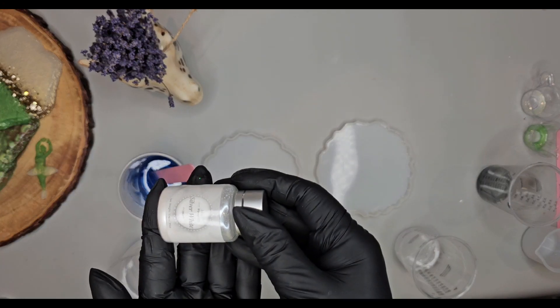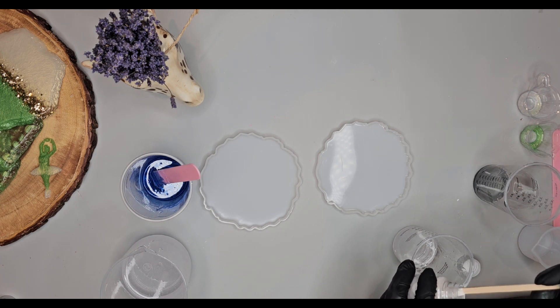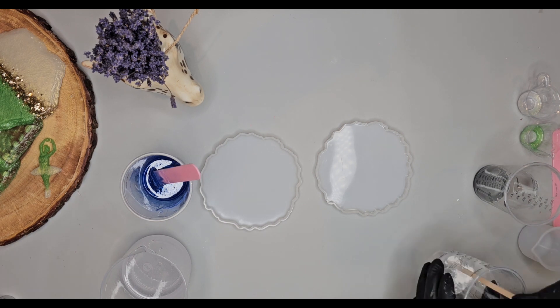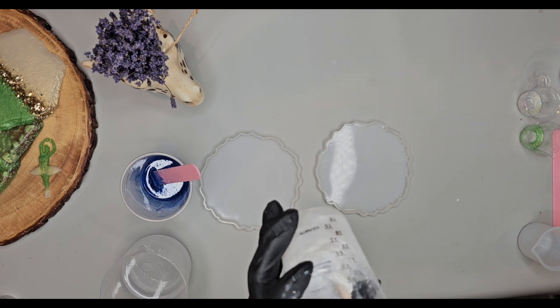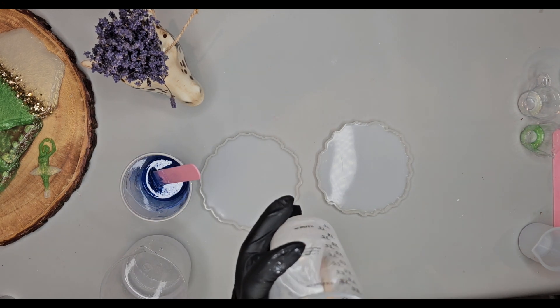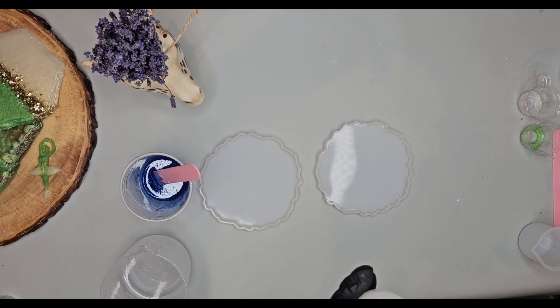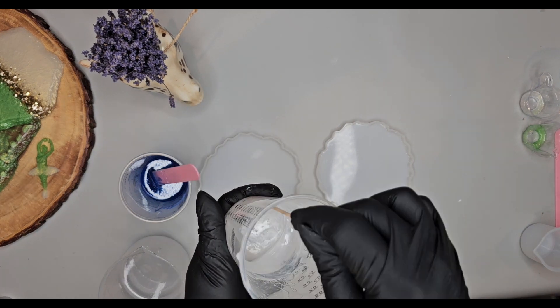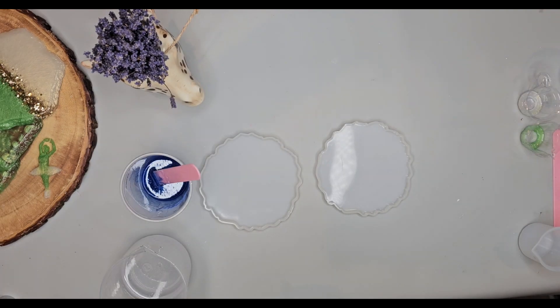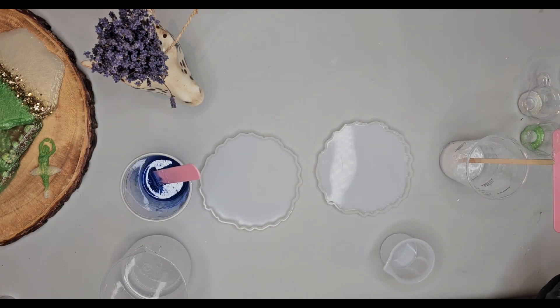For the second color, we are going to use silver white, and again it's mica powder. Make sure you mix it really well so we don't have any mica powder left on the sides or at the bottom of the cup, because if you're not going to mix it well enough, sometimes the powder can sit in your designs and it's not going to look really nice.